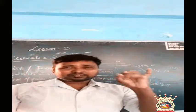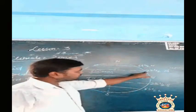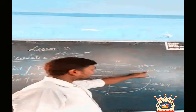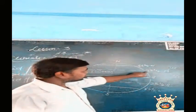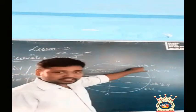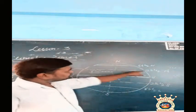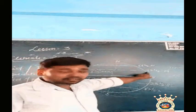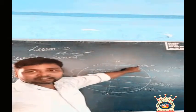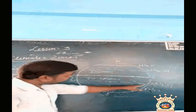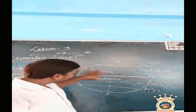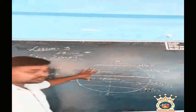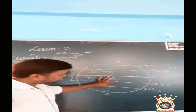Now we are going to look at the temperate zone. Temperate zone starts after 23 and a half degrees. From 23 to 66 degrees is the temperate zone.